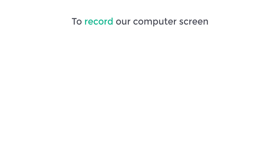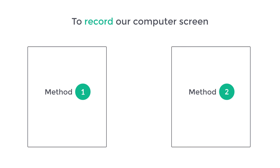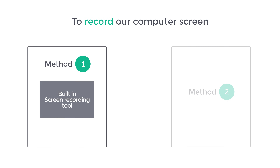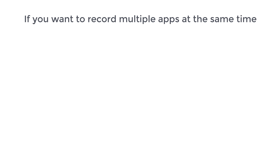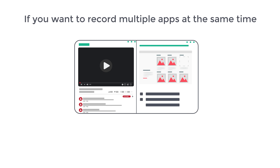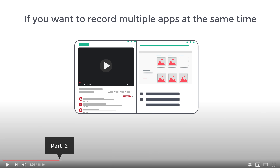To record our computer screen, there are two methods. The first method is to use the built-in screen recording tool which is available in Windows 10. You can use this method if you want to record only one app, for example your browser. Now if you want to record multiple apps at the same time, for example switching between two different apps, then you can skip to part 2 of this video, where we show you how you can record multiple apps at once.